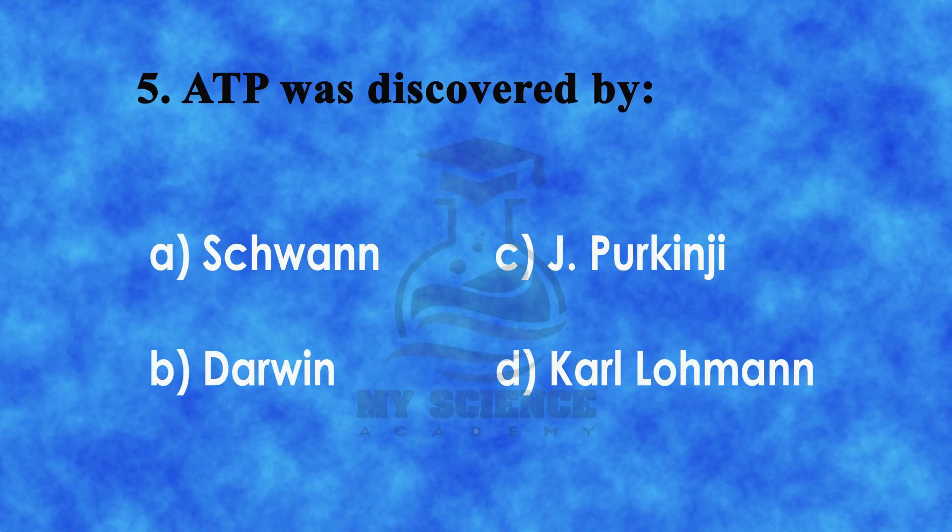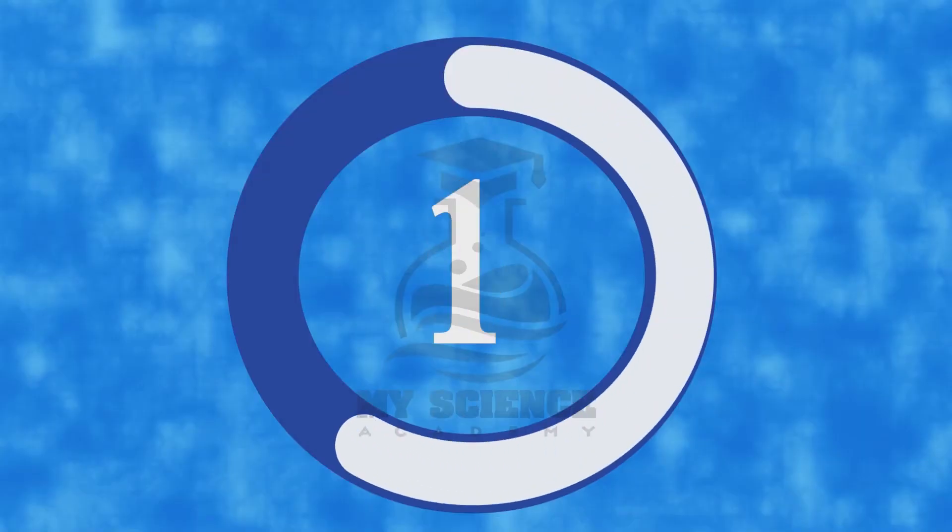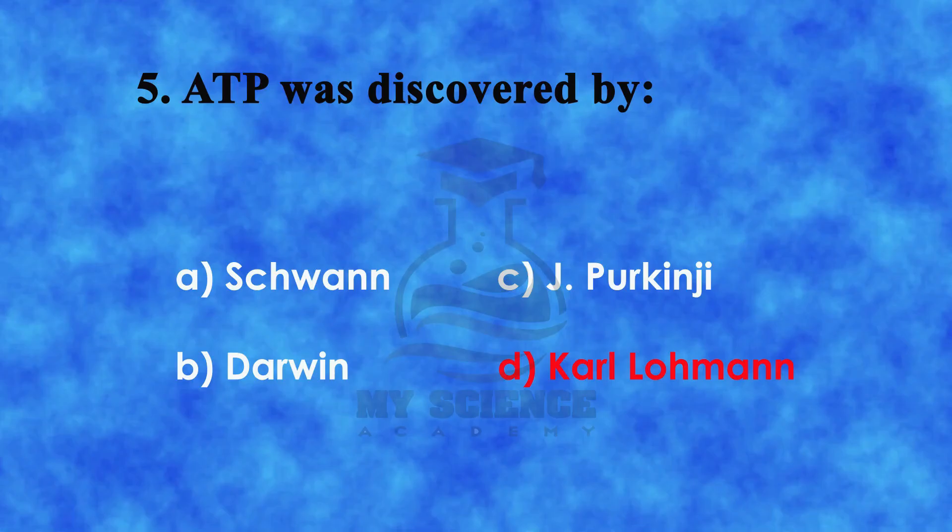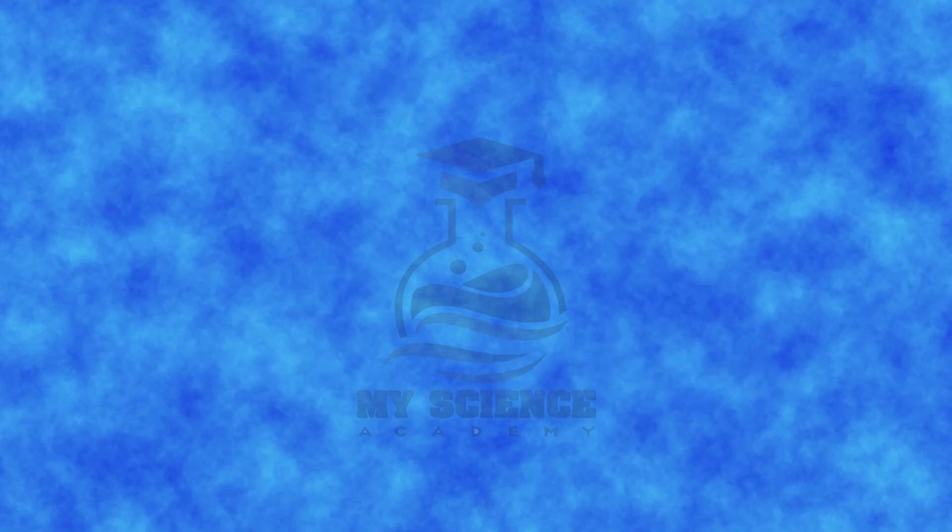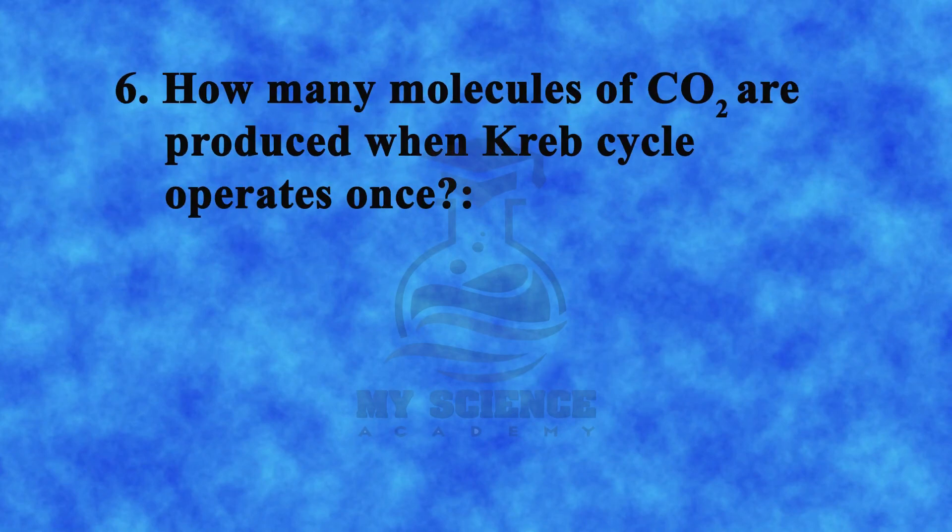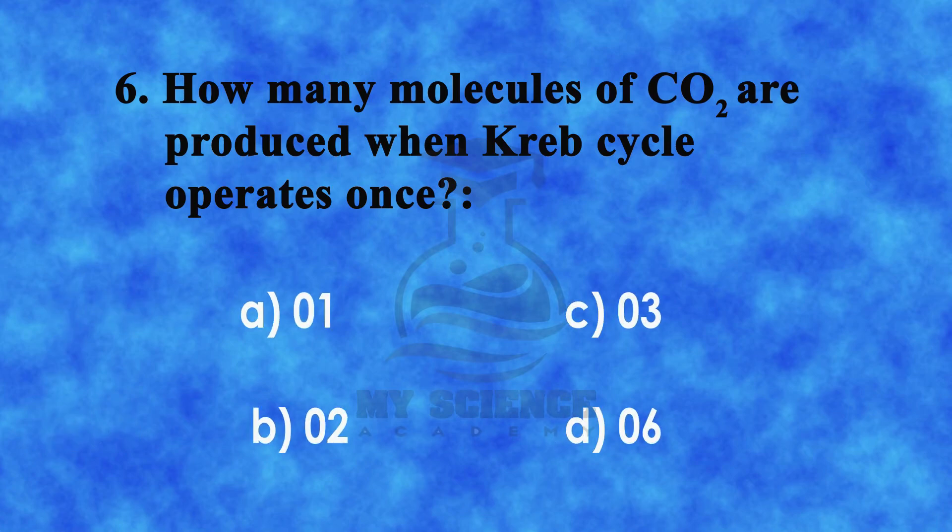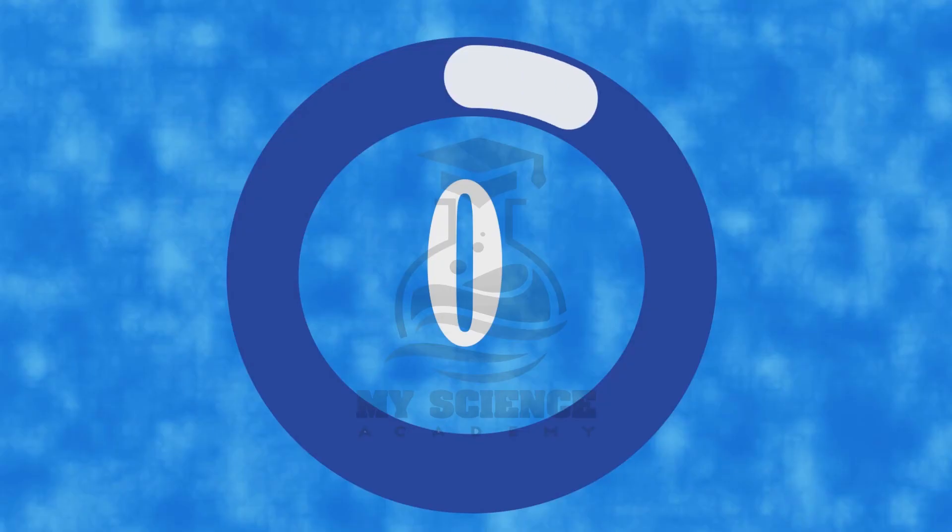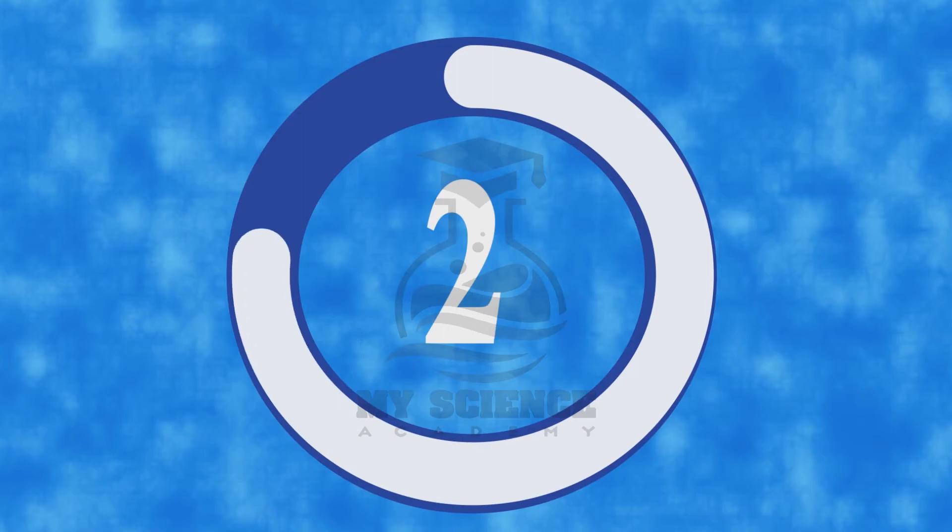The correct answer is d) Lohmann. Question 6: How many molecules of carbon dioxide are produced when Krebs cycle operates once? a) 1, b) 2, c) 3, or d) 6. The correct answer is b) 2.